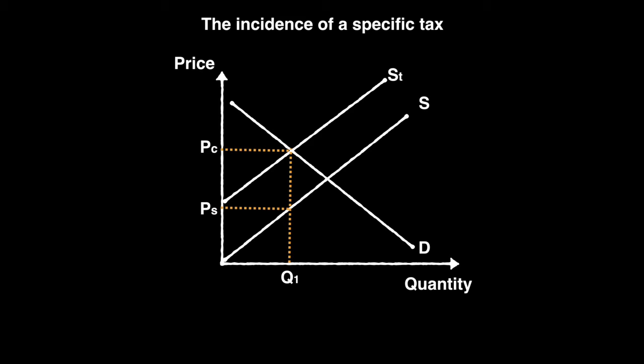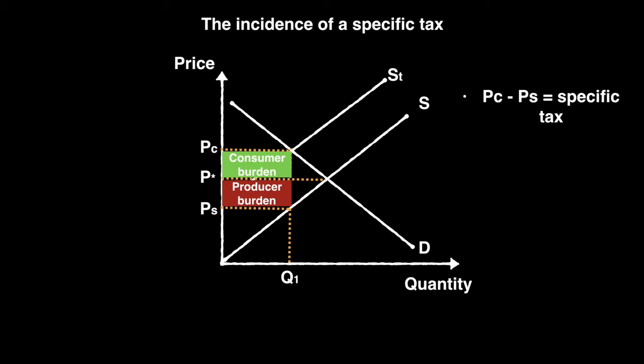Now we are able to determine the burden of taxation taken on by consumers and producers. The portion taken up by producers is the area below the initial equilibrium price and above the price received by sellers, bordered by Q1. The burden on consumers is equal to the amount they are paying above the initial equilibrium price times the quantity sold of Q1, represented on the graph in green. The total tax revenue received by the government is the area including both the consumer and producer burden, calculated by multiplying Q1 times PC minus PS.